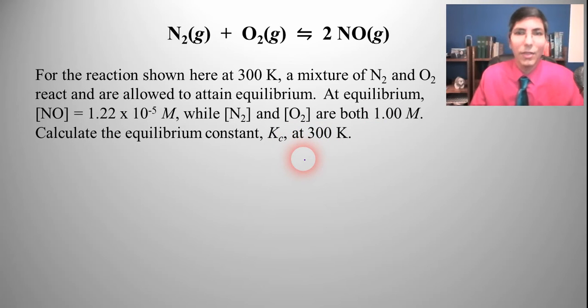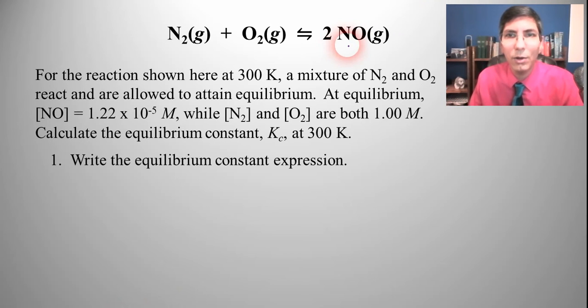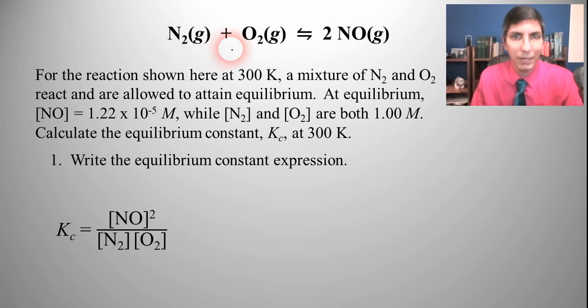Well once again the first thing that we have to do is write the equilibrium constant expression. So that's products over reactants raised to the power of the coefficient. So that's going to be NO squared all over N2 times O2 just like we have here.